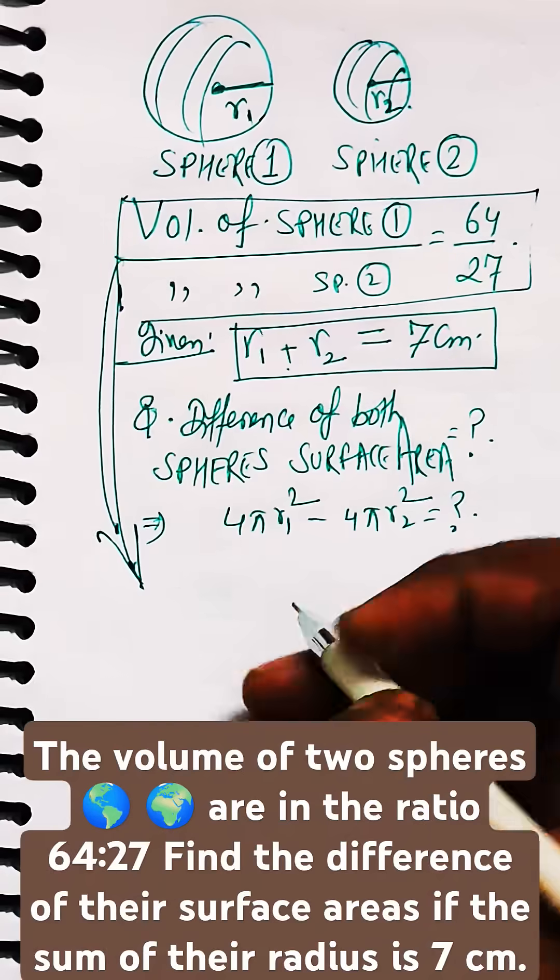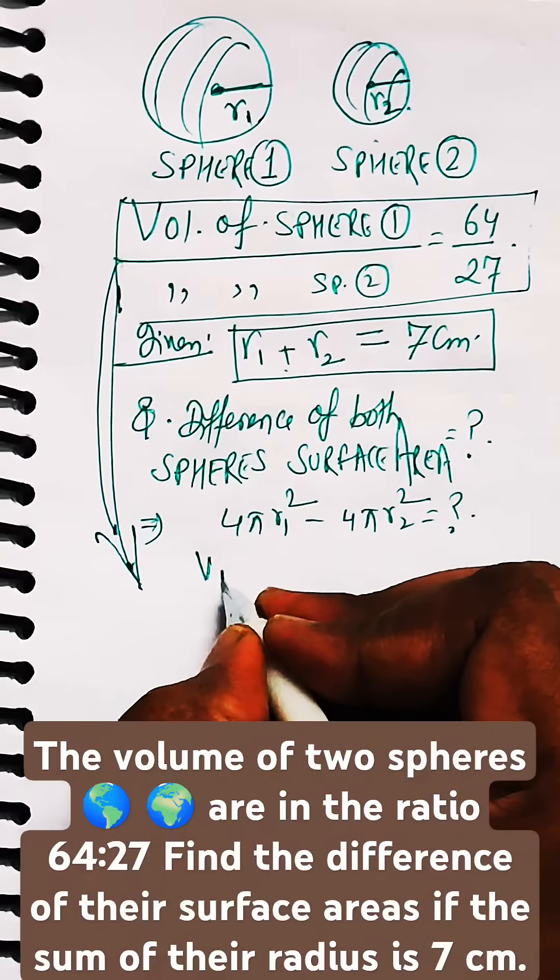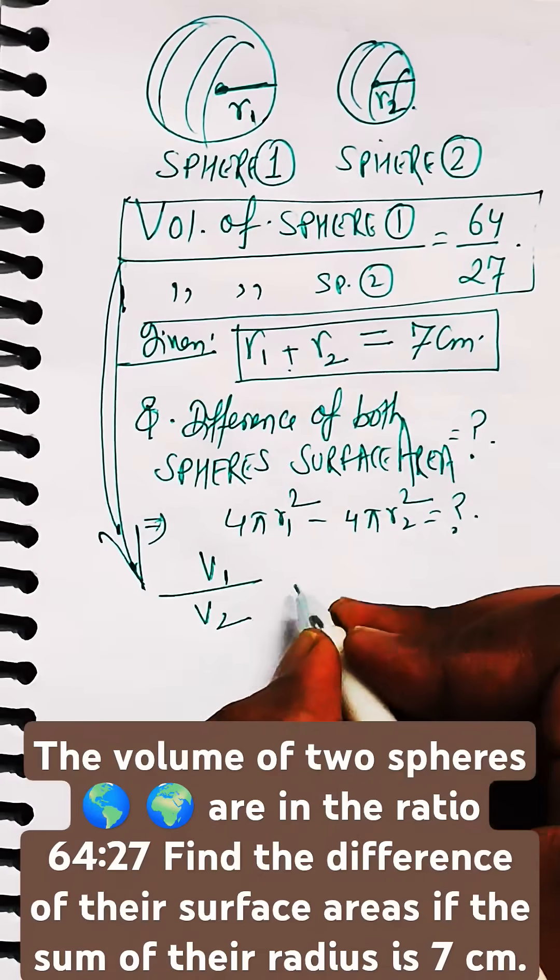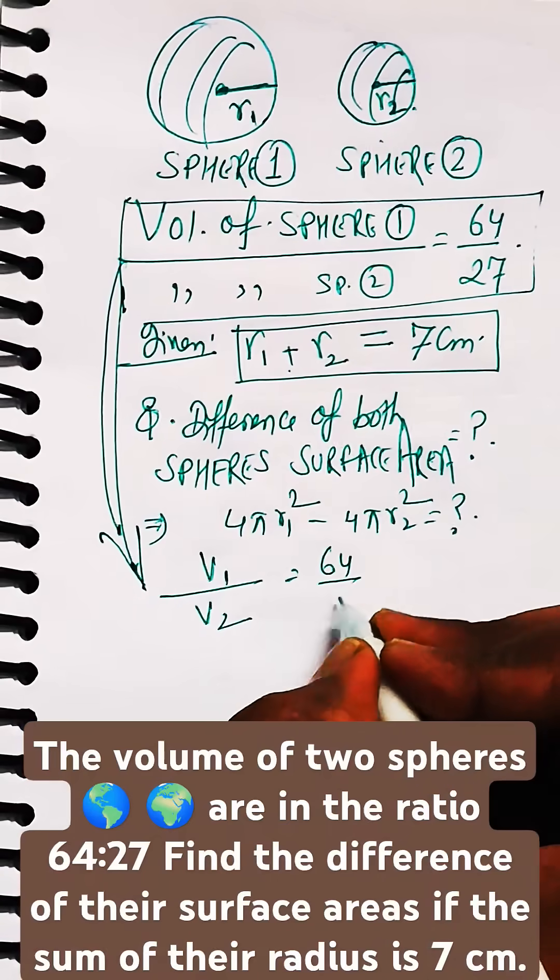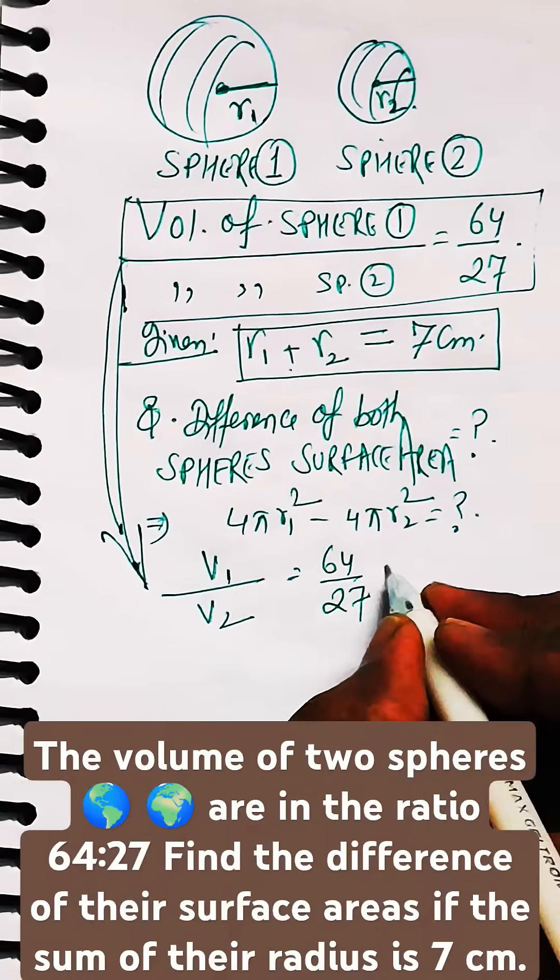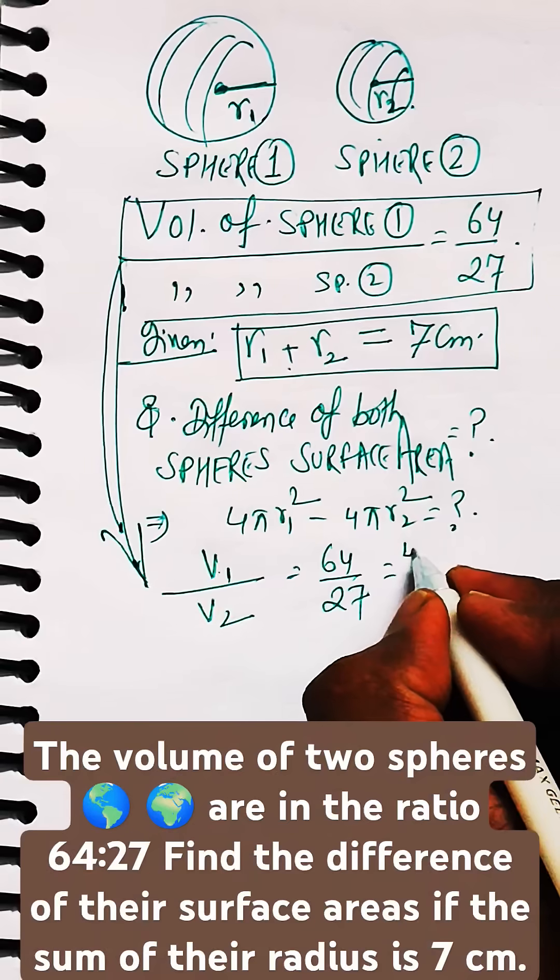Now the relation of the volume—the ratio of the volume of both these spheres is given to you as 64 by 27, what we have written on the top.